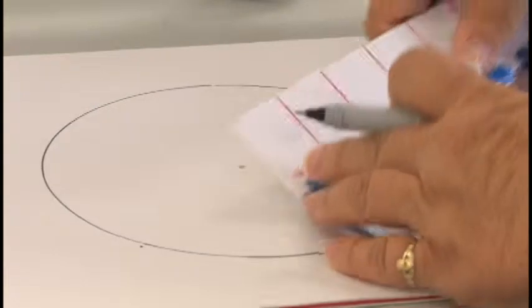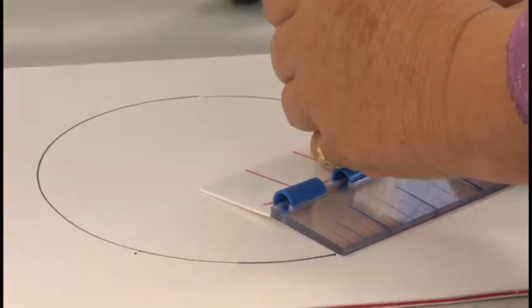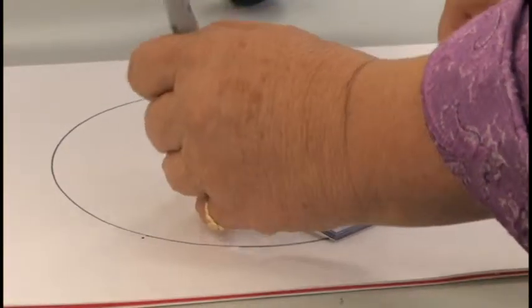Now we're going to remove my master angle and with my pencil or marker, whatever, I'm going to connect my dots from the center point to the edge of the circle.